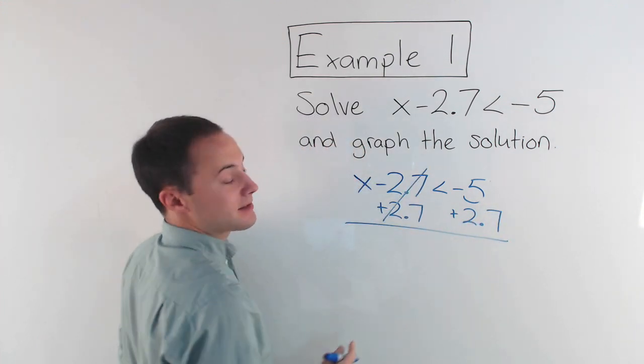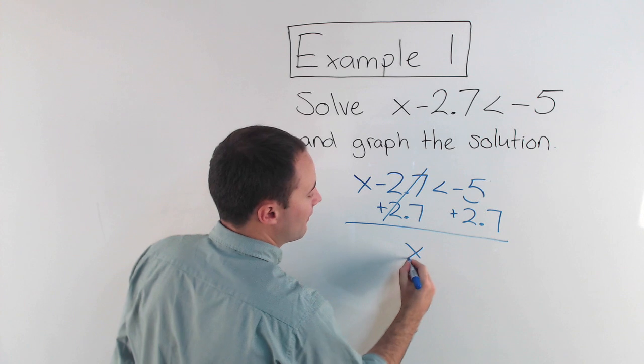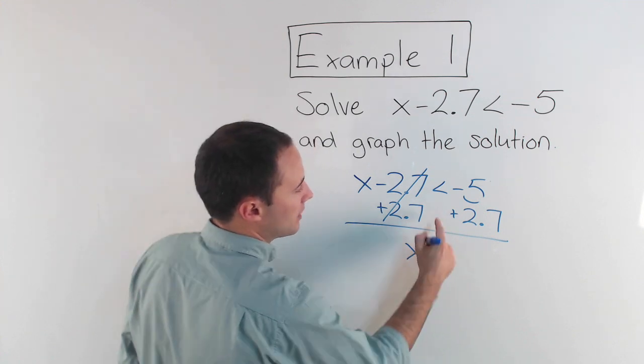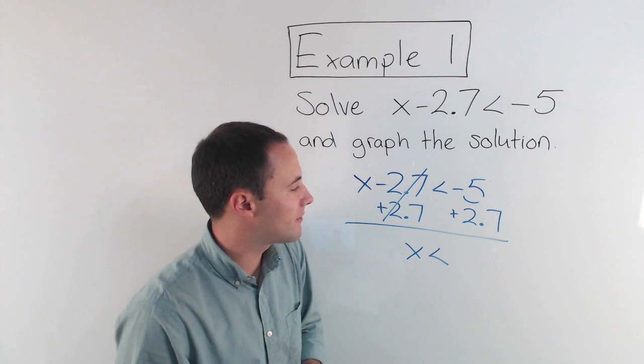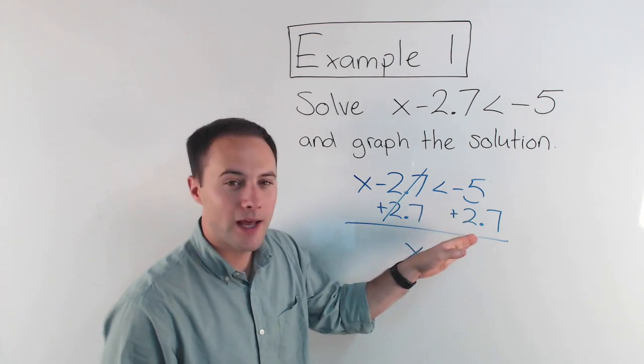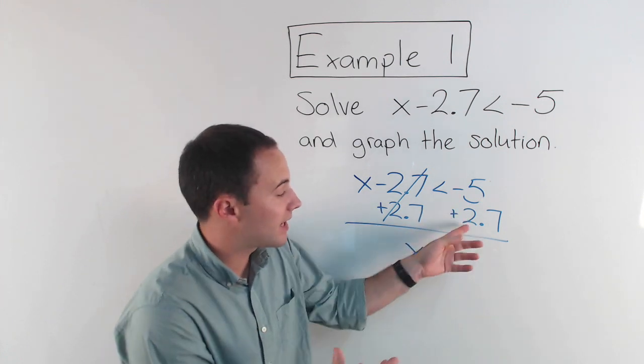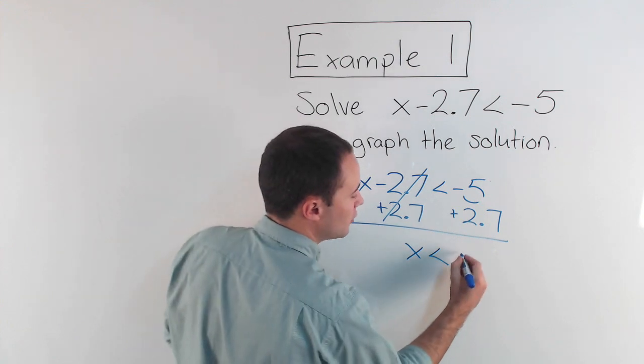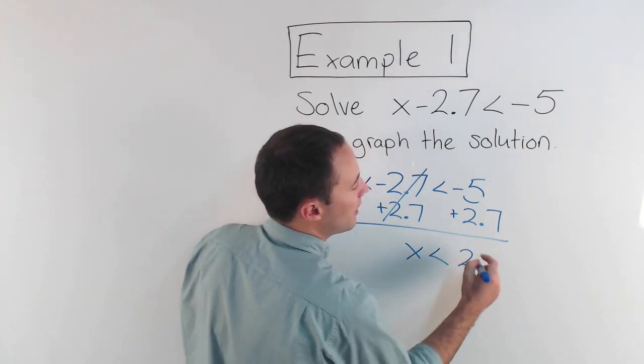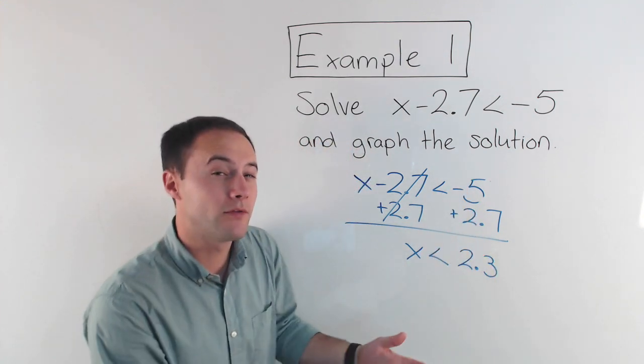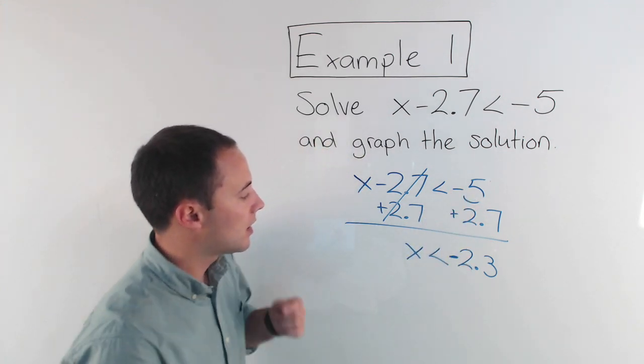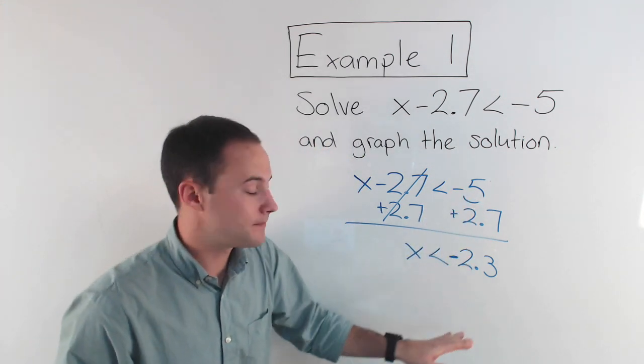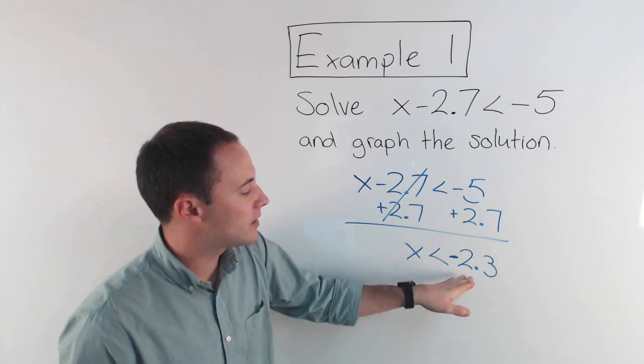Well, those are going to cancel out. I have x, bring down the less than, is less than, negative 5 plus 2.7. I've got a negative and a positive, so something's canceling out. 2.7 is canceling out. I've got 2.3 and because the negative 5, the absolute value of it is greater, that means that's going to be negative. So this is my solution: x is less than negative 2.3.